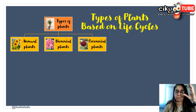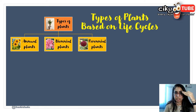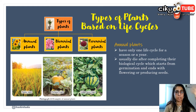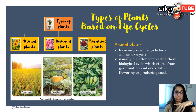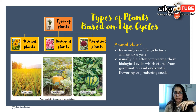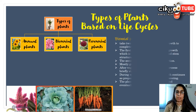Now let's look at the types of plants based on their life cycle. We have three types: annual, biennial, and perennial plants. Annual plants have only one life cycle — one season or one year — and they die after completing their biological cycle, which starts from germination and ends with flowering or producing seeds. Examples include paddy, pumpkin, and watermelon.